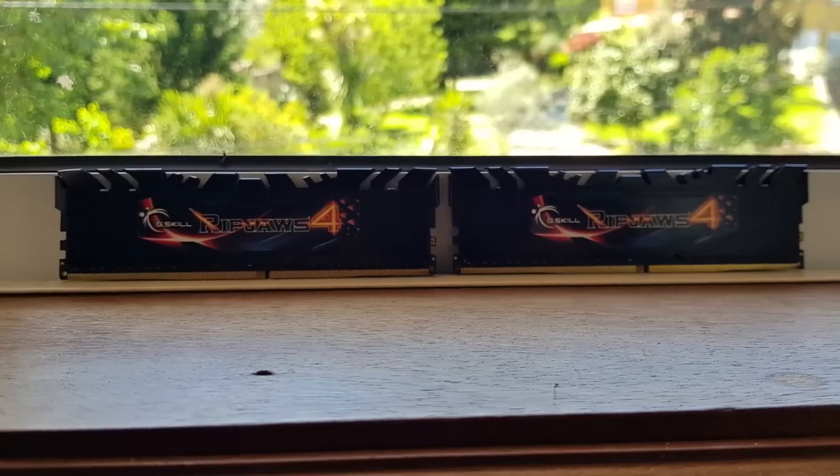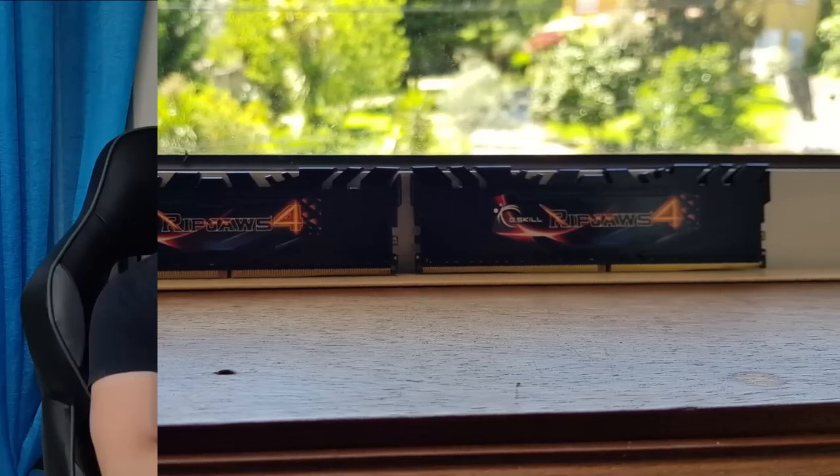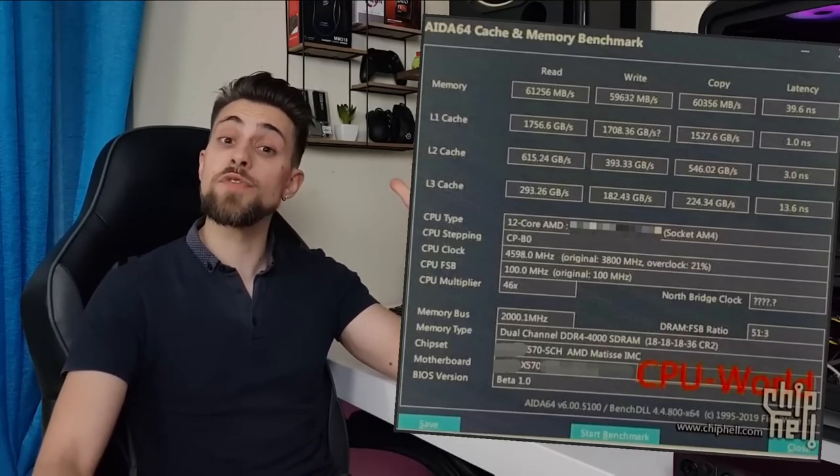Now that you have the basics, we can go to the overclocking part. Many people ask me how I reach such speeds at lower timings. First of all, your combination — the RAM, CPU, and motherboard combination — matters a lot. Going with Intel CPUs may let you achieve higher frequencies at lower timings compared to Ryzen CPUs, at least for now.